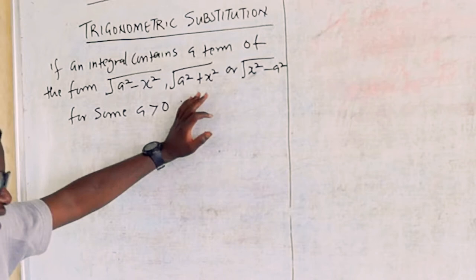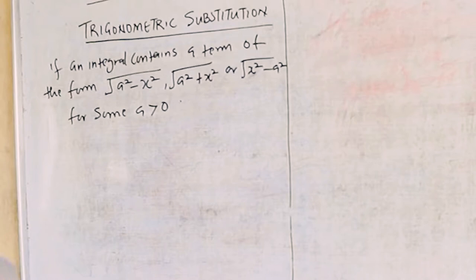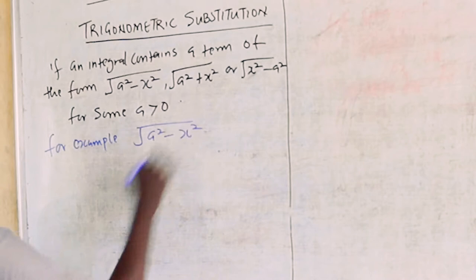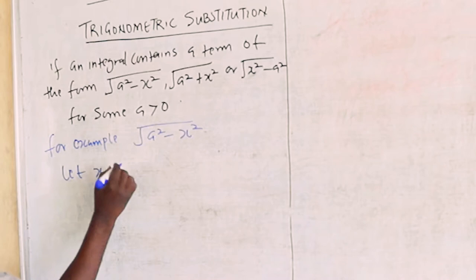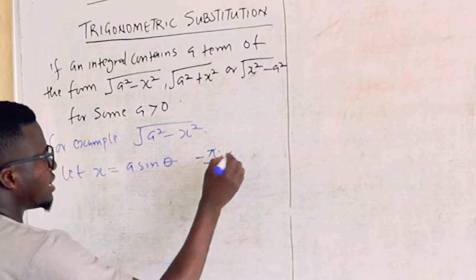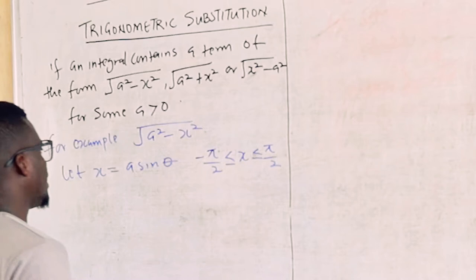So the format for solving is: for example, when we have square root of a squared minus x squared, we say let x be equal to a sine theta, for minus pi over 2 less than or equal to theta less than or equal to pi over 2. Then we come back to our integration and substitute.